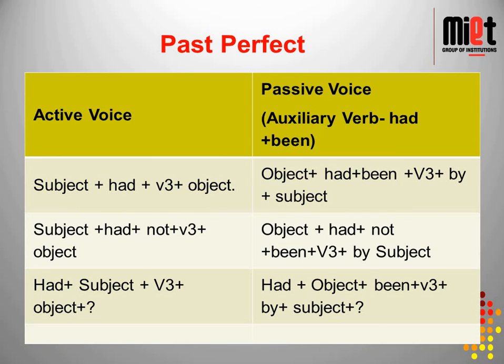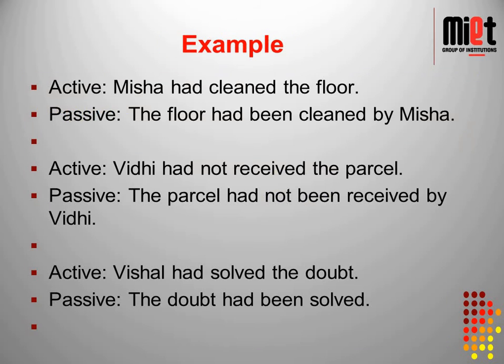In past perfect tense, active voice uses 'had' plus third form. In passive voice, we use 'had been' plus third form. Construction: object plus 'had' plus 'been' plus third form plus 'by' plus subject. For negative: add 'not' after 'had'. For interrogative: 'had' plus object plus 'been' plus third form plus 'by' plus subject. Examples: 'Misha had cleaned the floor' becomes 'The floor had been cleaned by Misha'. 'Vishal had solved the doubt' becomes 'The doubt had been solved by Vishal'.